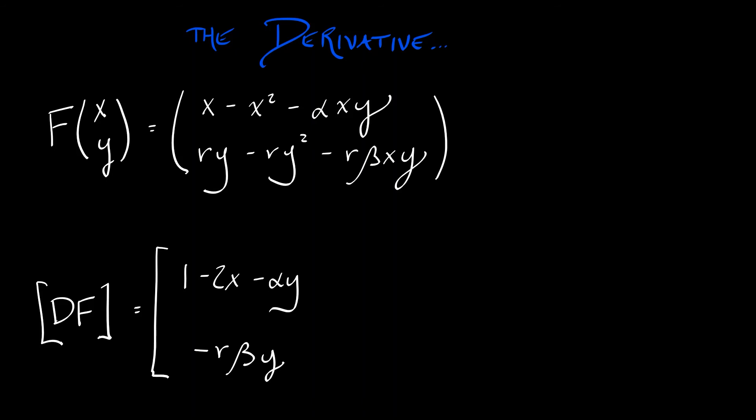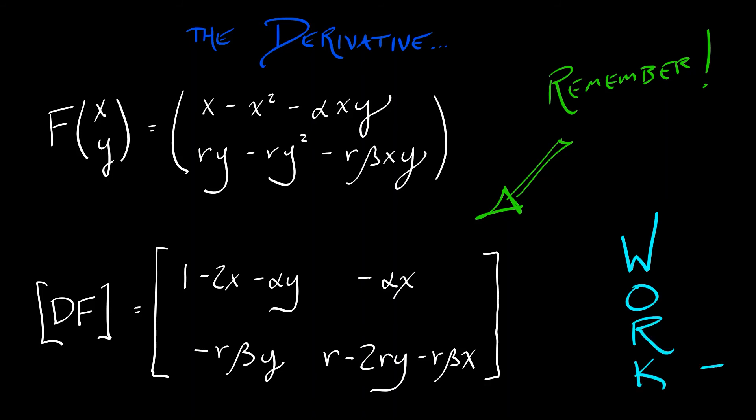The second column of the derivative matrix is the partials with respect to Y. That is minus alpha times X, then R minus 2RY minus R times beta times X. Now you're going to want to remember this derivative because we've got a little bit of work to do in order to classify those equilibria.